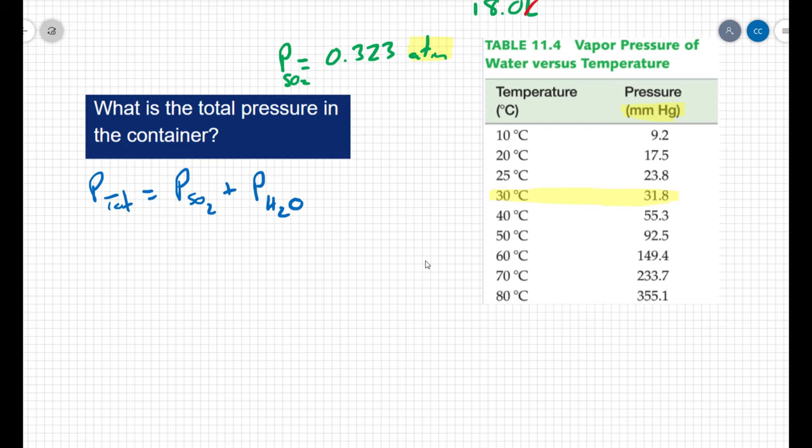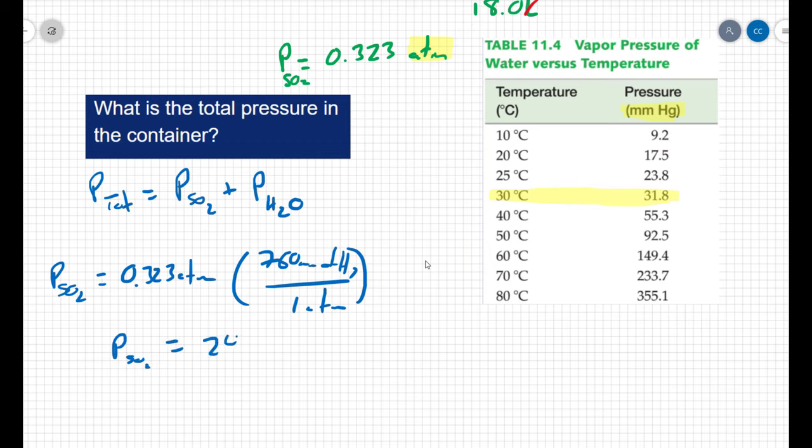Let's take our pressure of the sulfur dioxide, which we found to be 0.323 atmospheres. Let's convert it to millimeters of mercury. There are 760 millimeters of mercury for every one atmosphere. That means our pressure of the sulfur dioxide is going to equal 246 millimeters of mercury.